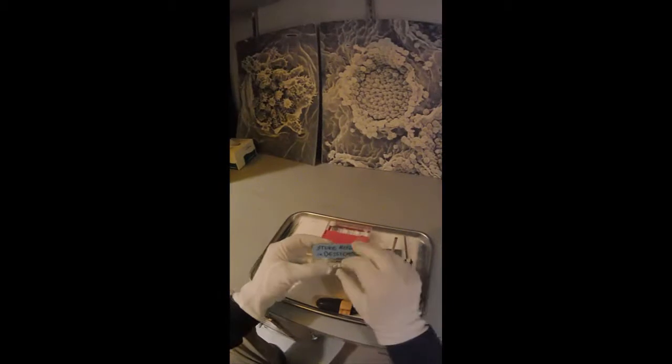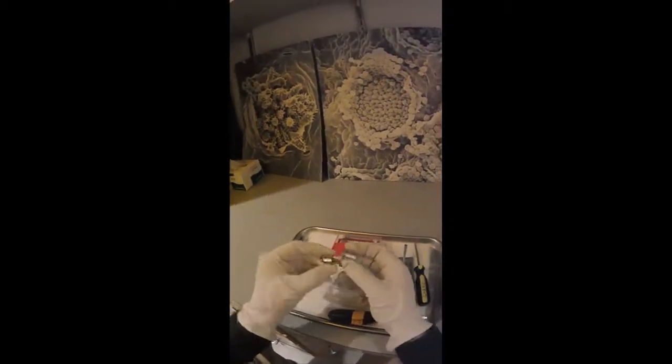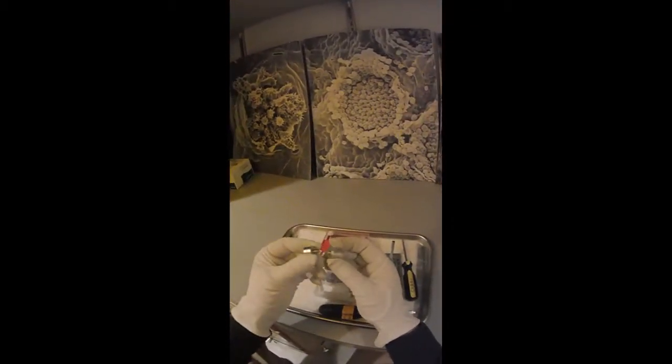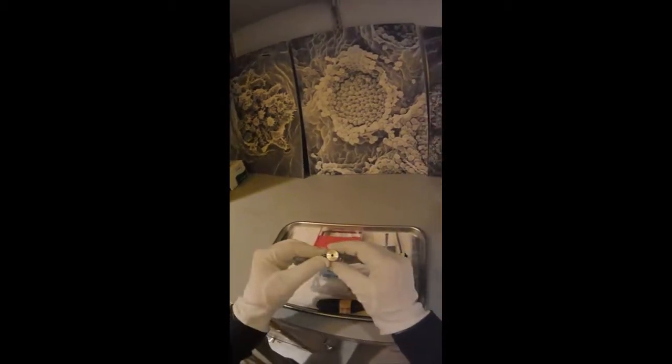The sample holder, like it says, is in the desiccator in the other room and the sample holder is basically a series of lock nuts and a bolt with a set screw to hold the stub in place.